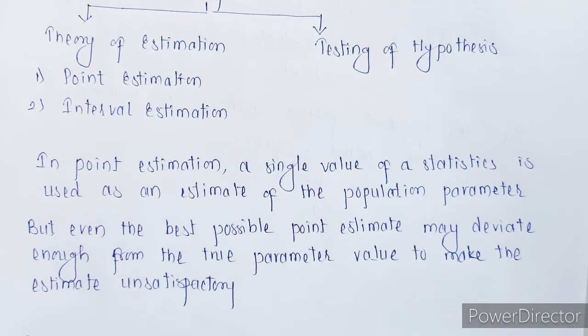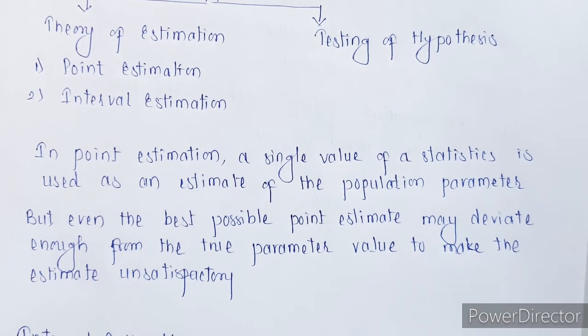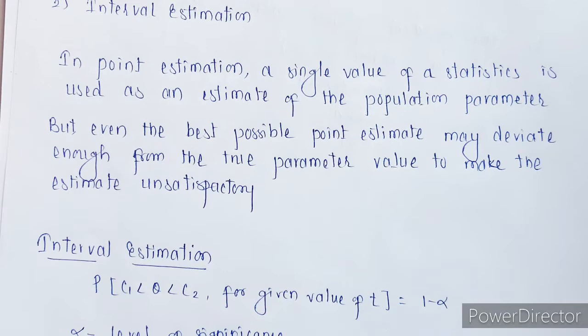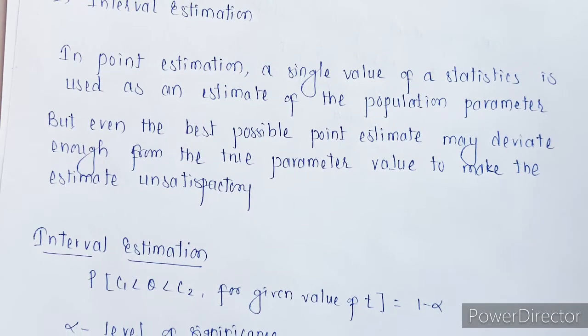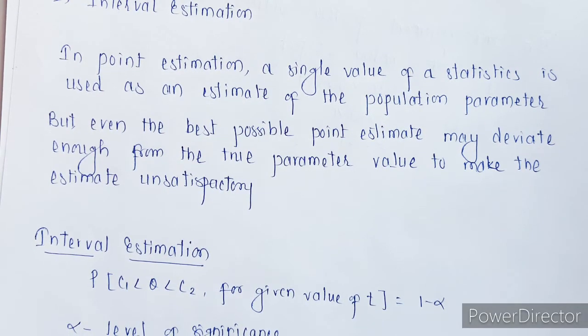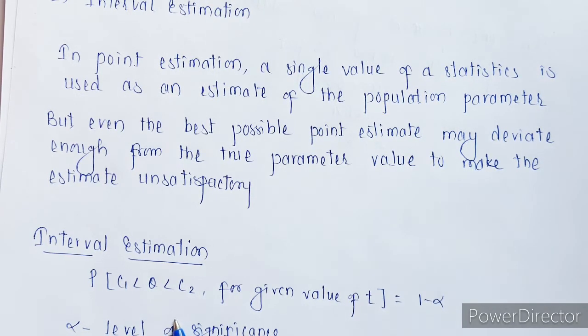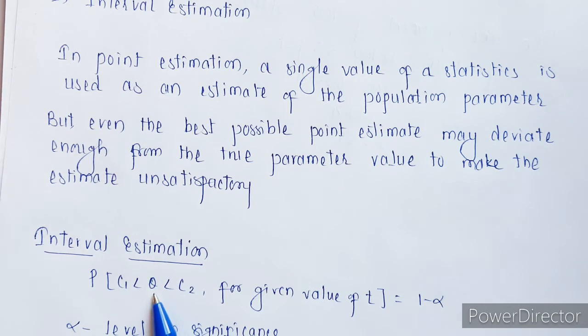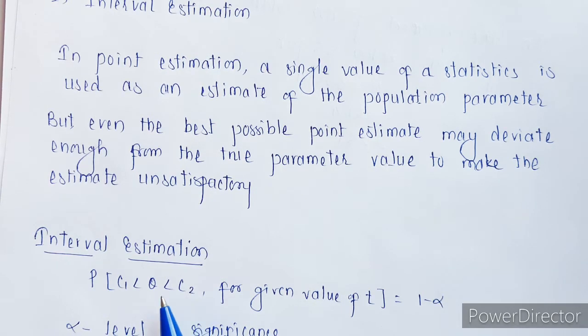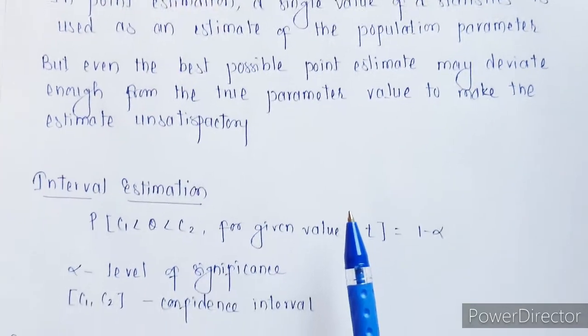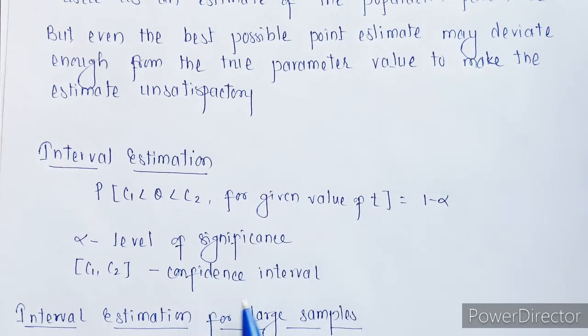That is the reason we go for interval estimation. So in interval estimation, what we are doing is we are looking for the value under or in that particular interval. Suppose we are looking for this value theta, we are going to look for the value in a certain interval. So suppose these are c1 and c2 constants. This value theta will lie in this particular interval, and this interval is called as a confidence interval.